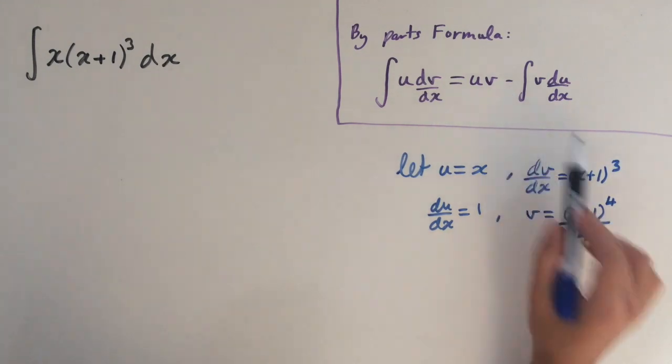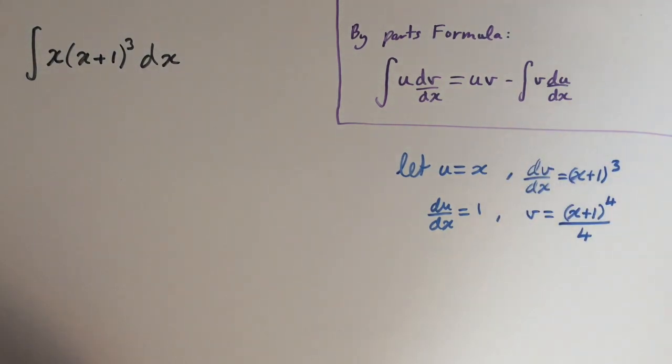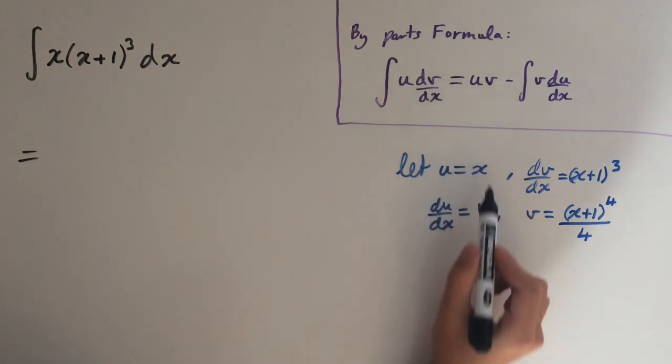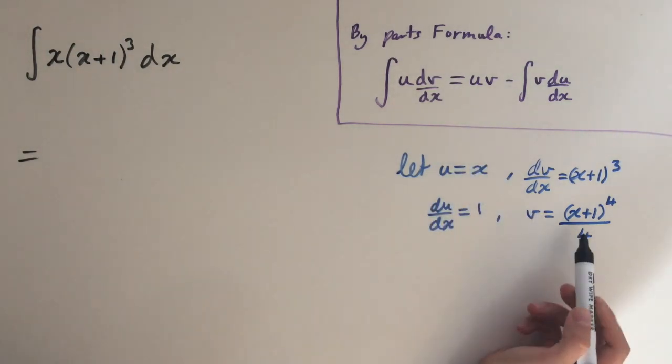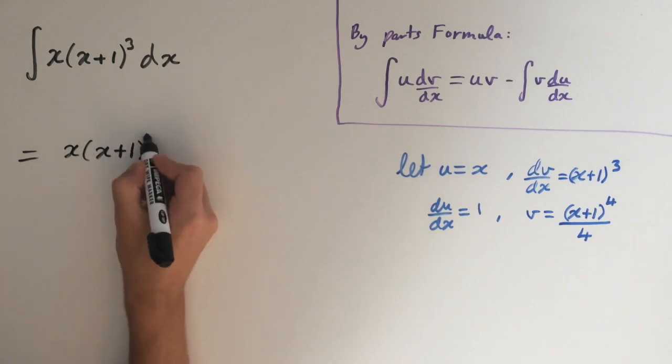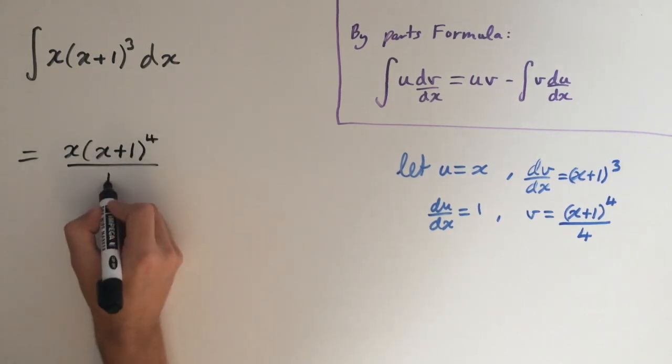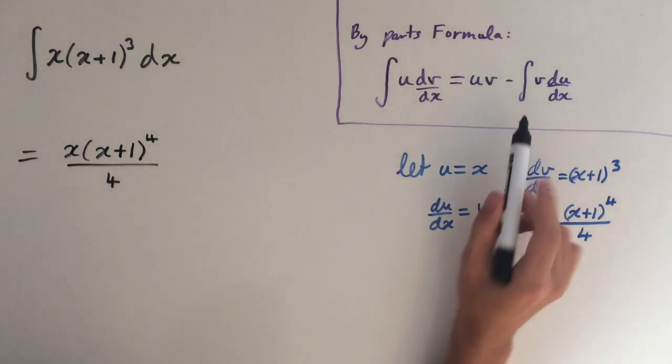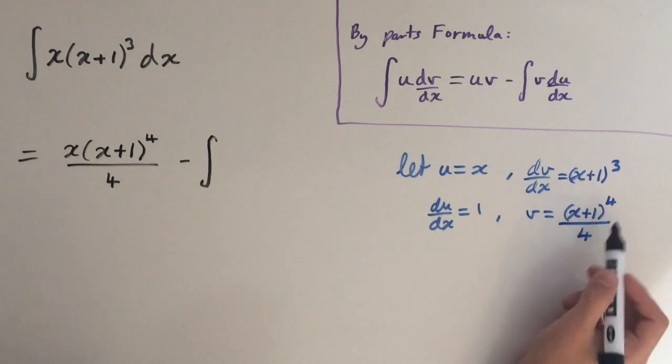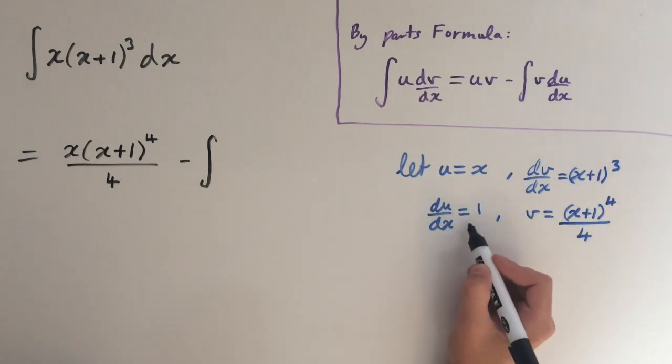So now we can just plug it into the formula and see what we get. So this is going to equal uv, so x times x plus 1 to the power of 4, all over 4.